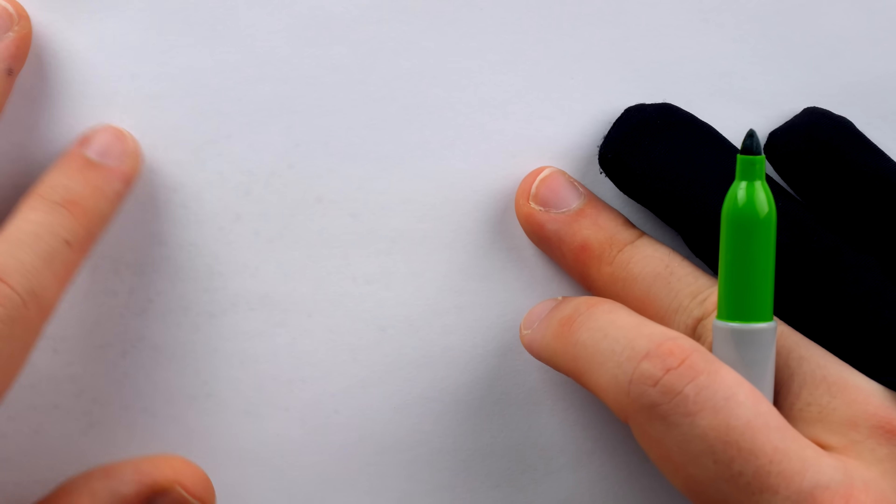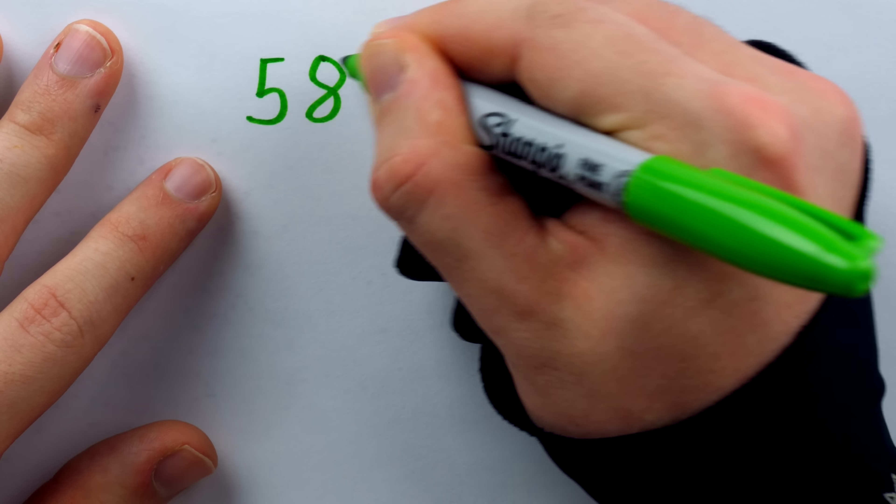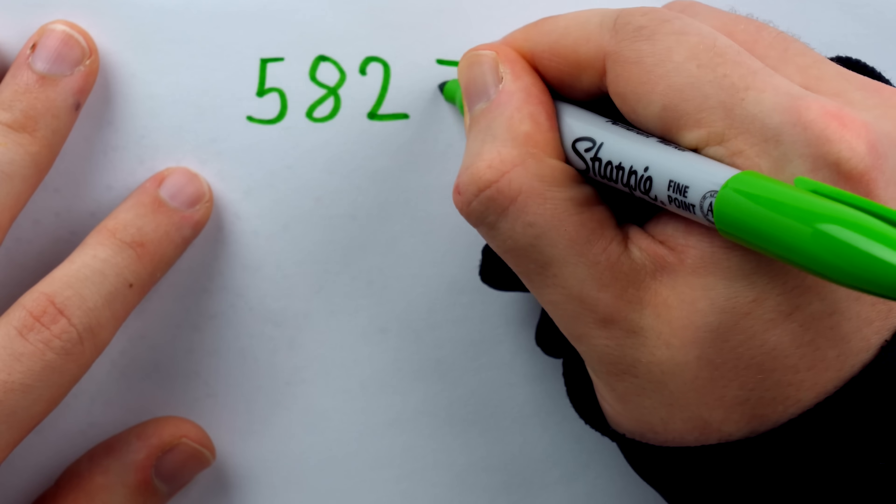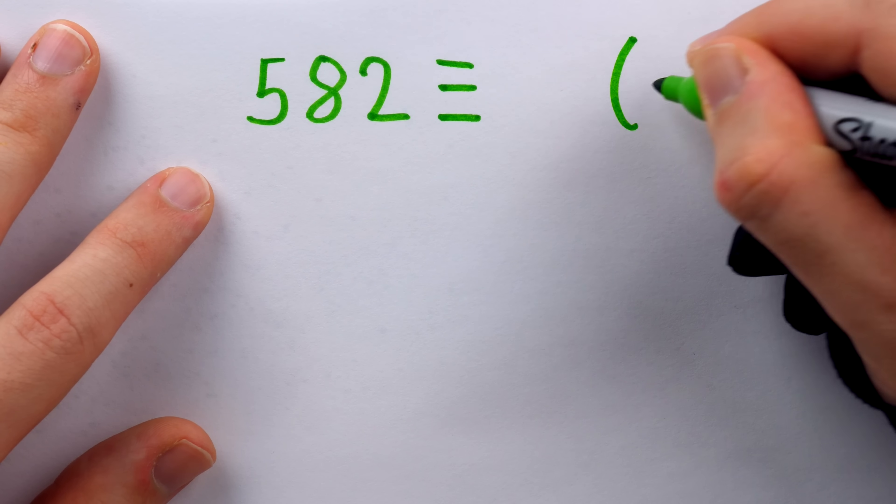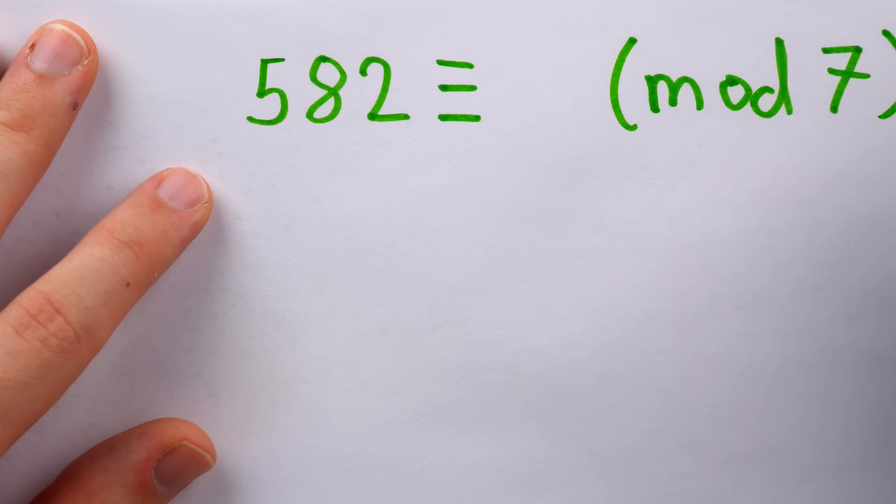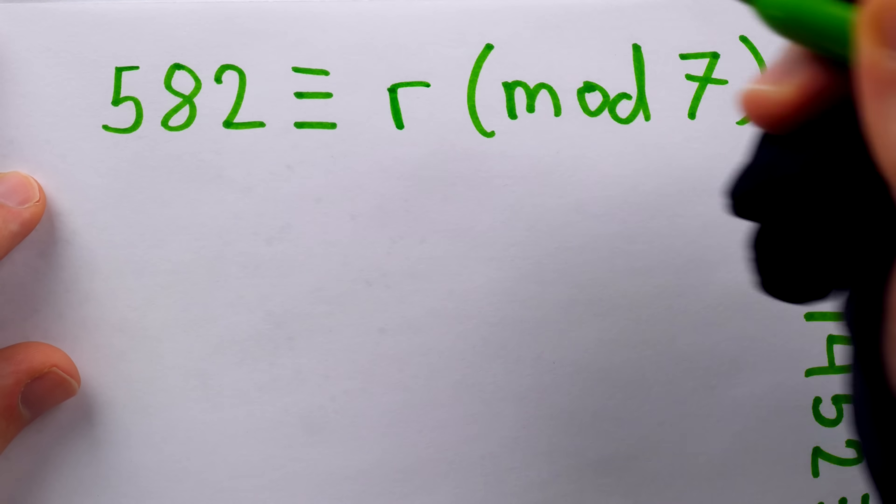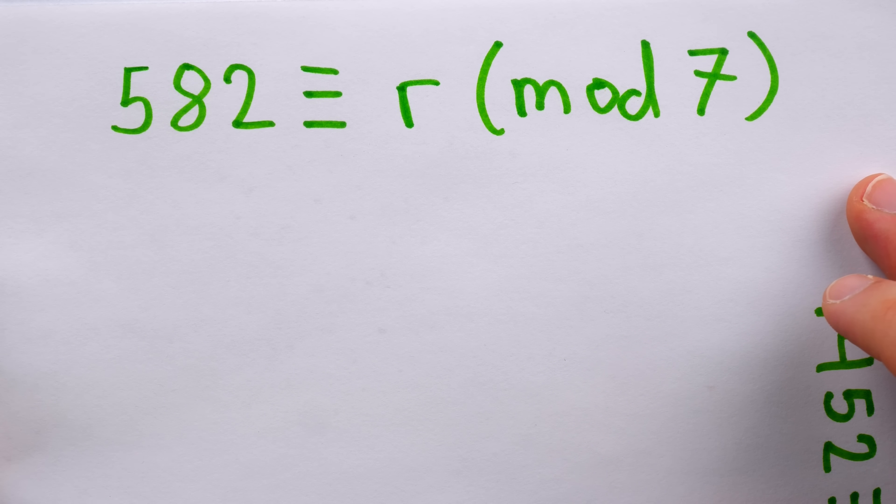For another example of modular congruence, we could do more short division. For example, what is 582 congruent to mod 7? Well, this would be the remainder when 582 is divided by 7. So what goes here? Well, it's the remainder. Let's do some short division to figure out what that is.